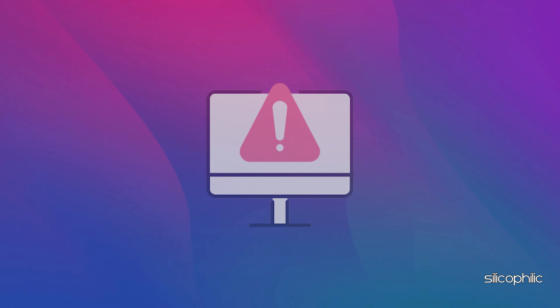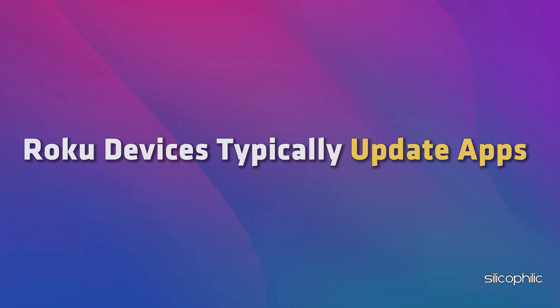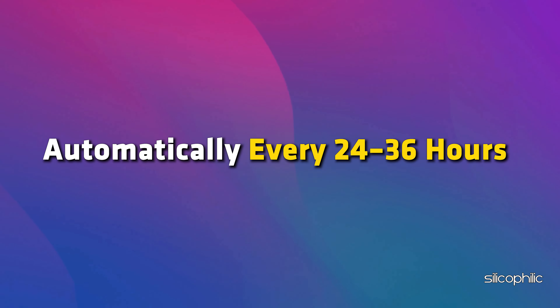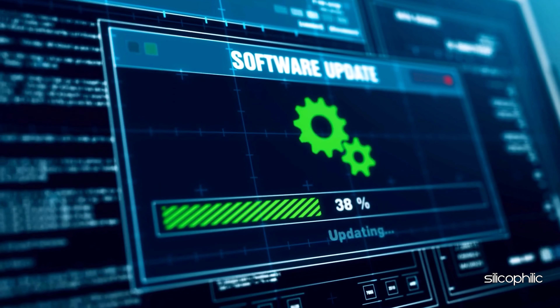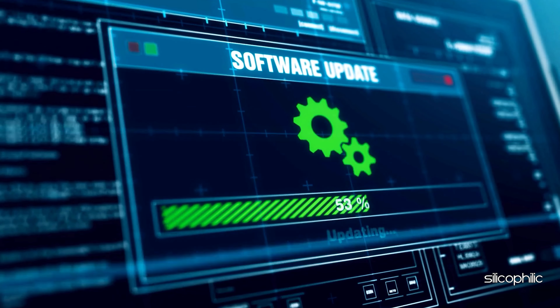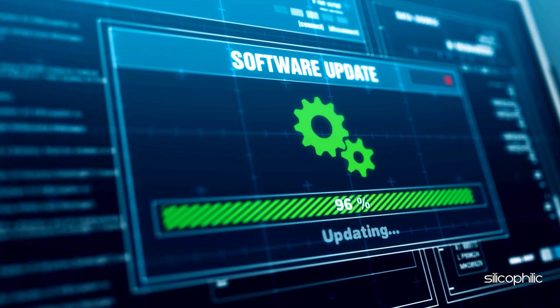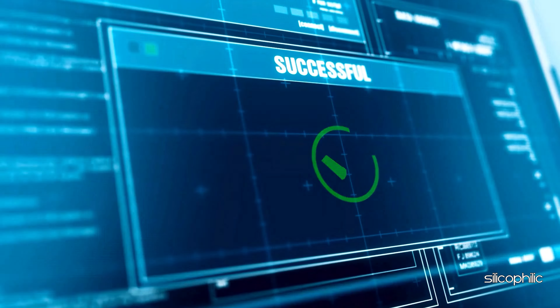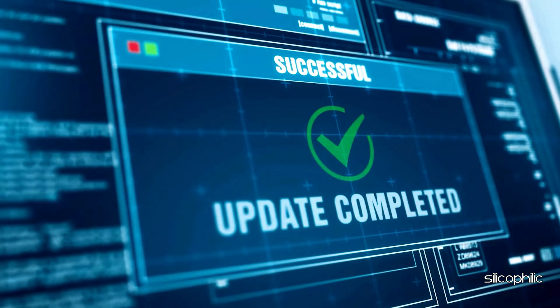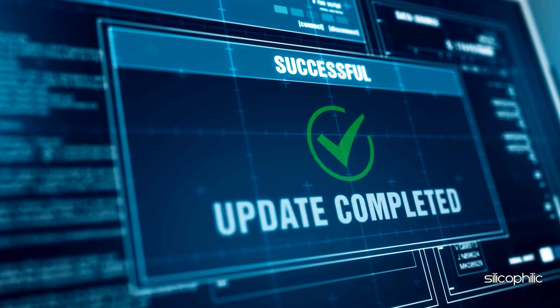Method 3: Update the Specific App. Outdated apps can sometimes cause errors. Roku devices typically update apps automatically every 24 to 36 hours when connected to the internet. However, you may need to manually update an app if you have disconnected your Roku for a long time or installed a non-certified channel.